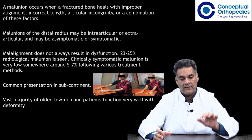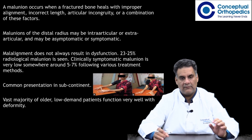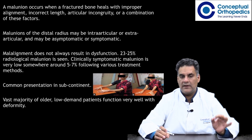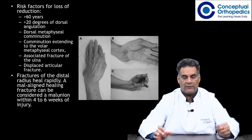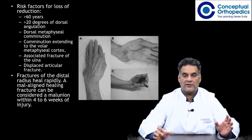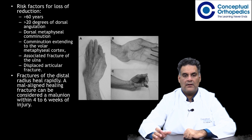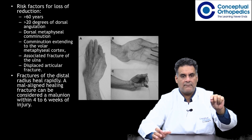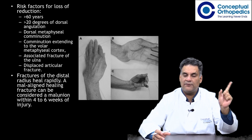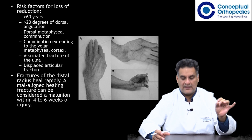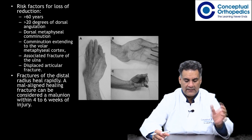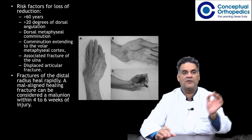The vast majority of older, low-demand patients function very well with the deformity. Risk factors for loss of reduction include older age, 20 degrees of dorsal angulation, dorsal metaphyseal comminution, collapse extending to the volar metaphyseal cortex, associated fracture of the ulnar styloid, distal radioulnar joint injury, and fractures extending to the metaphysis.